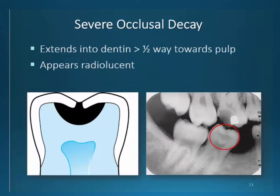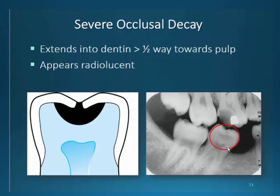Severe occlusal decay is quite obvious — it has passed beyond one half of the distance towards the pulp. The radiolucency becomes large and dense, and the area becomes similar to that of the pulp. You can see that there is still a little matter of tooth structure separating the decay. However, this area may have penetrated somewhere in the tooth structure and the pulp of this tooth may have gotten involved.